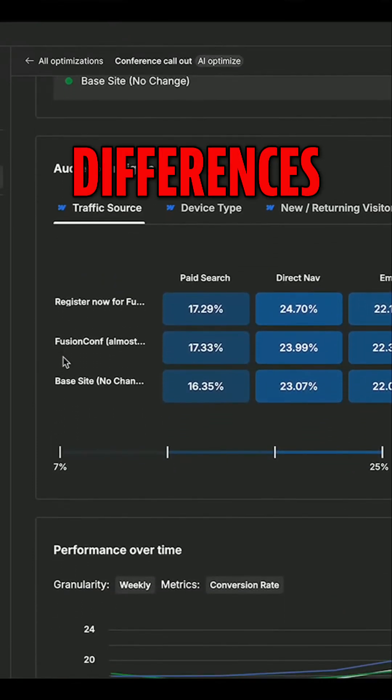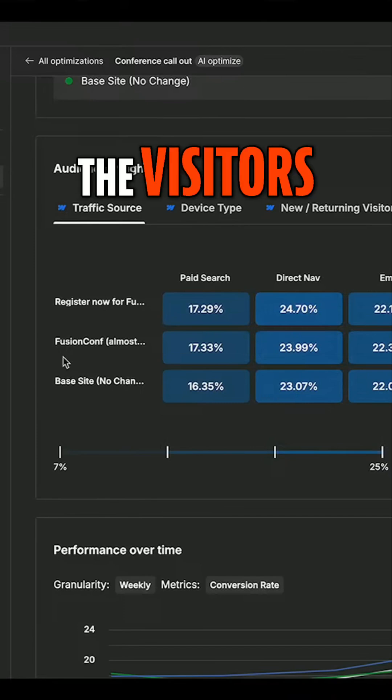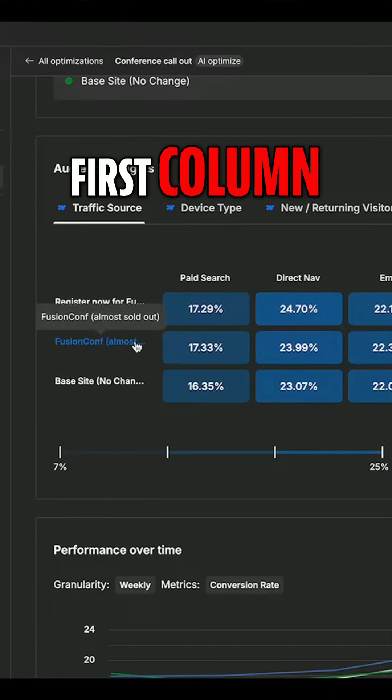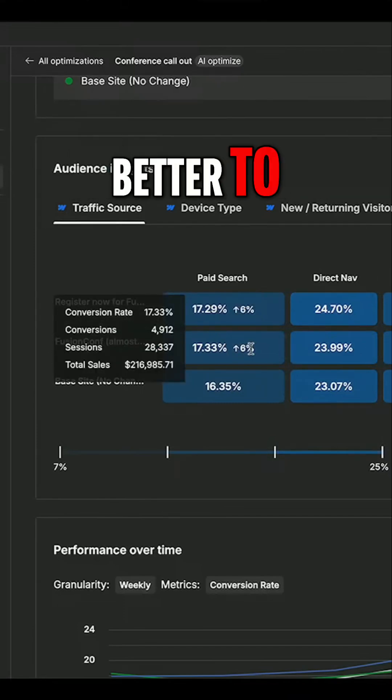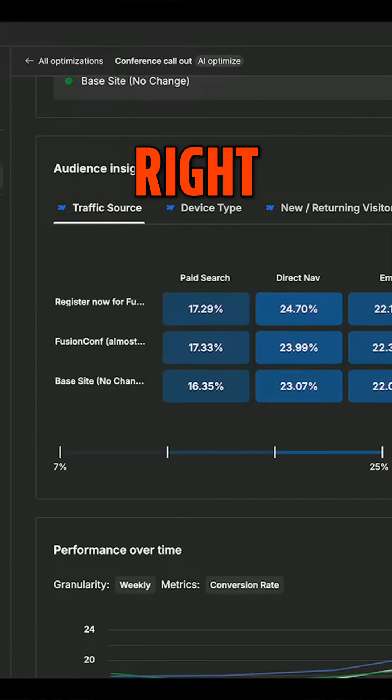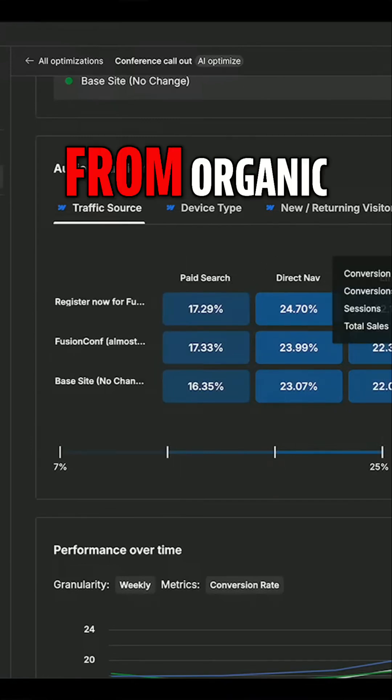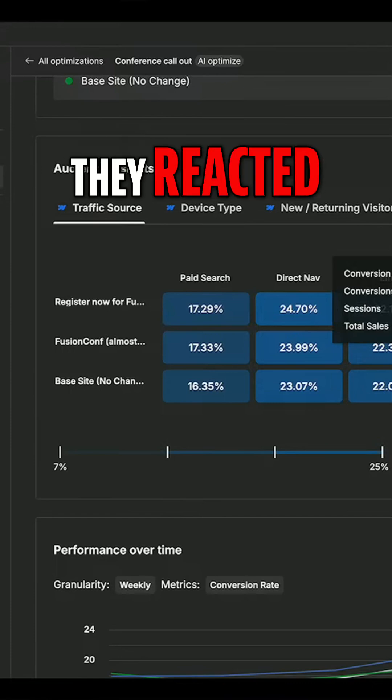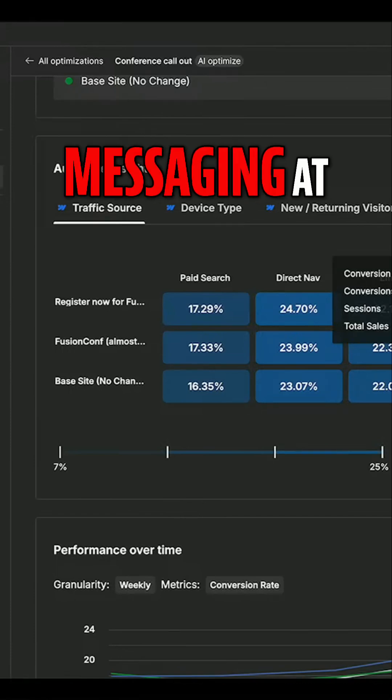That's a lot of differences. You can see that the visitors from paid search in the first column reacted better to the register now messaging in the middle. But if you go over to the right to the folks who came over from organic search, they reacted better to the almost sold out messaging at the top.